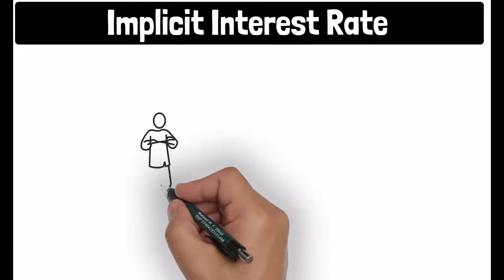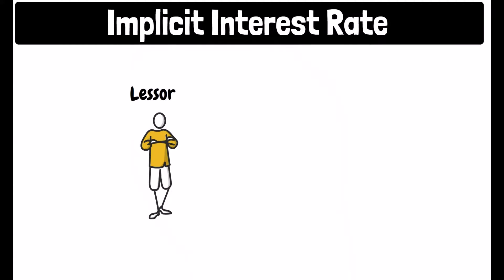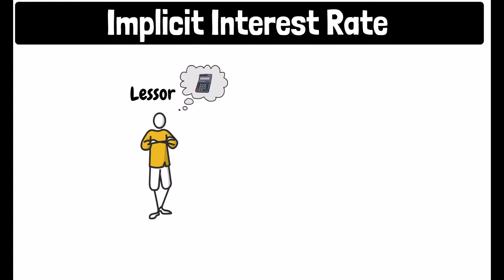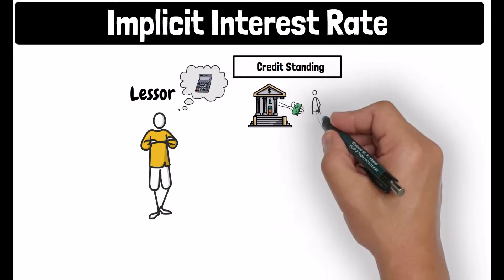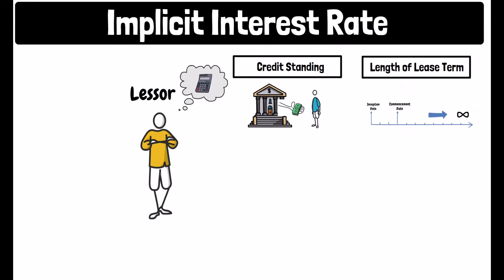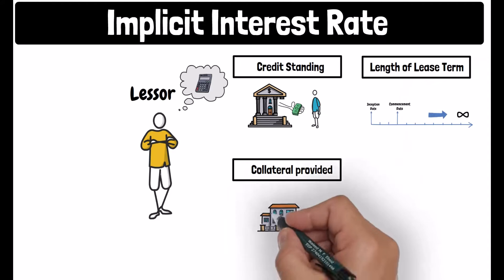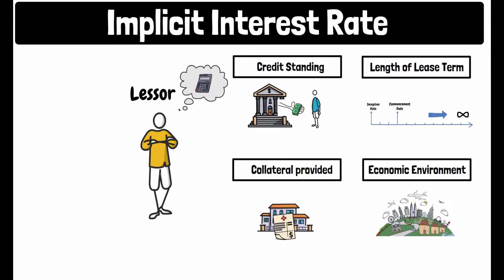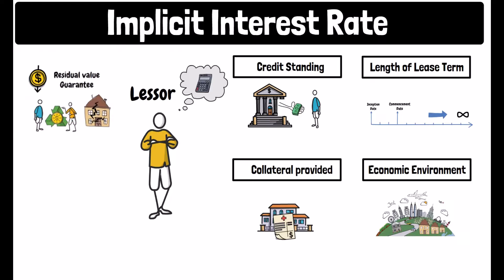The interest rate implicit in the lease is the lessor's rate. The lessor is the party that calculates that rate based on factors like the credit standing of the lessee, the length of the lease, the nature and quality of the collateral provided by the lessee, and the economic environment in which the lease transaction occurs. In addition to some data specific to the lessor, such as the lessor's estimate of the residual value of the underlying asset and any initial direct costs paid by the lessor.